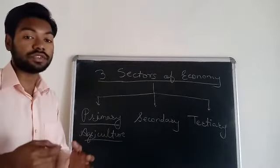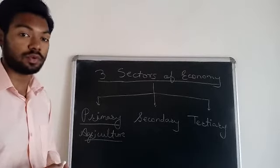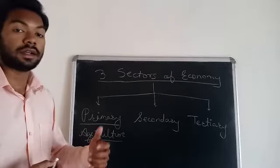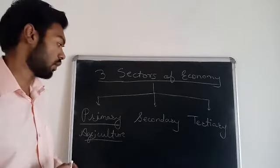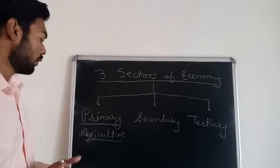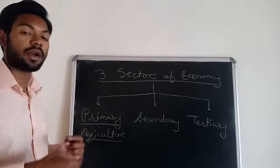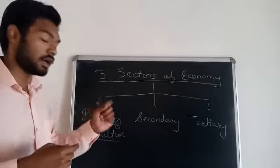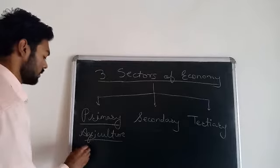In this primary sector, since it deals entirely with nature, we can also use technical materials and scientific tools. We use technology like tractors, biotechnology, chemical fertilizers, and organic fertilizers. Whatever processes are done in this sector are all related to nature, and the output from these processes is what we use to earn money.